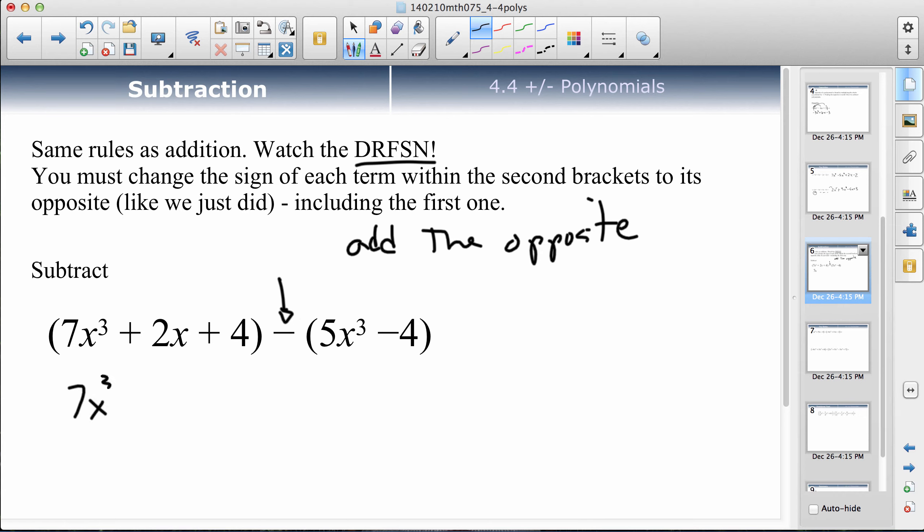I'm going to drop the brackets on the first one, change this minus to a plus, and then this one inside here is positive already so it'll become a negative 5x cubed. This is a negative 4 so I change it to a positive 4. Now I can collect like terms. 7x cubed minus 5x cubed is 2x cubed. There's no x squared terms. And then 4 plus 4 is 8.